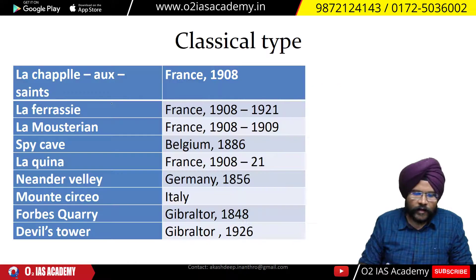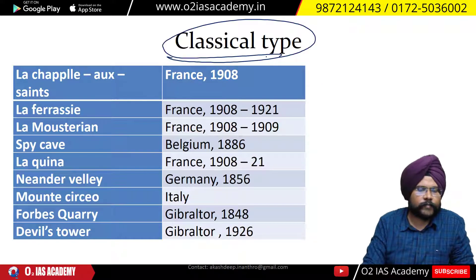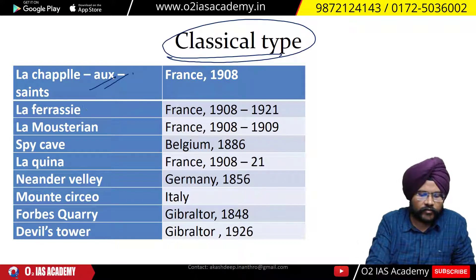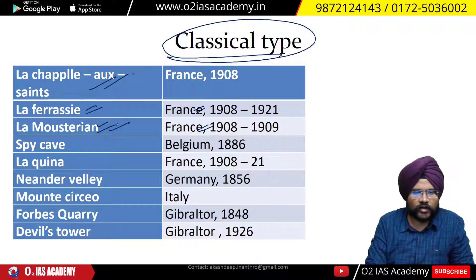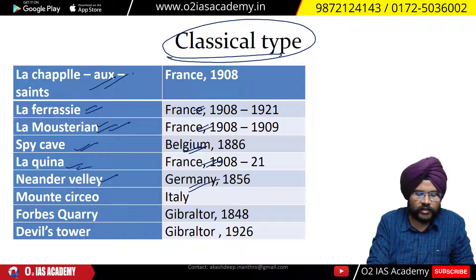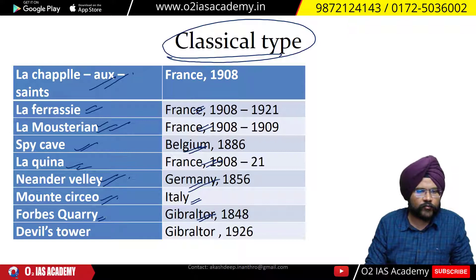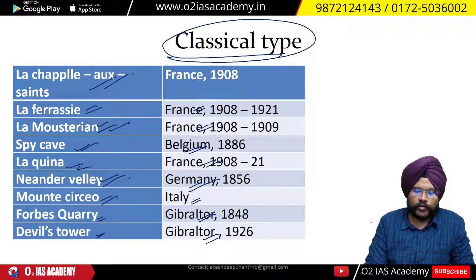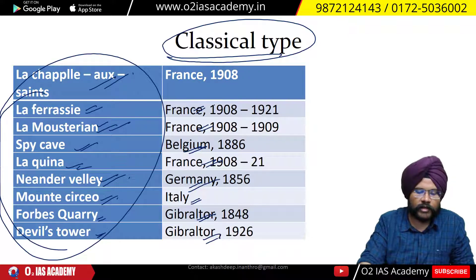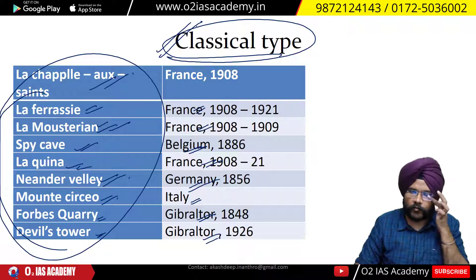The Classical type was found in France at La Chapelle-aux-Saints cave and La Ferrassie cave, in Belgium at Spy cave, in Germany at Neanderthal Valley, in Italy at Monte Circeo, and in Gibraltar at Forbes Quarry cave.